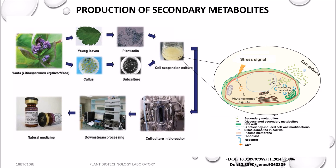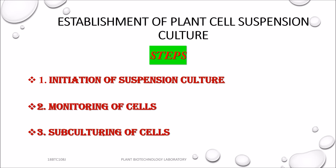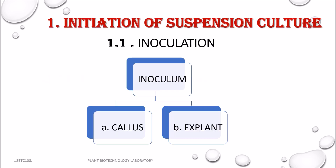Plant cell suspension culture is majorly used for the production of secondary metabolites, as they are important for their pharmacologically active properties. Establishment of plant cell suspension culture involves three major steps: initiation of the suspension culture, monitoring of the cells for propagation and viability, and maintaining the cells by subculturing at regular intervals.